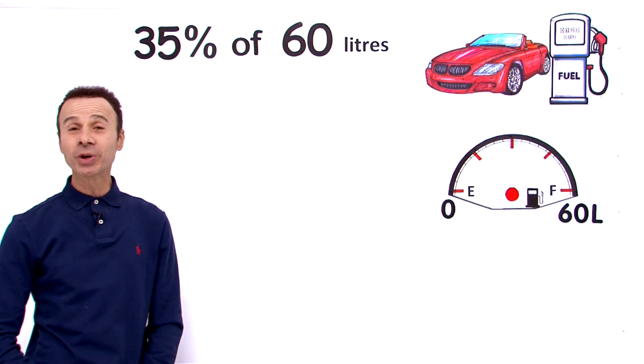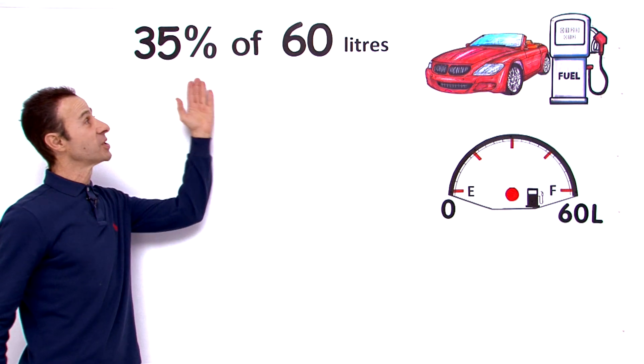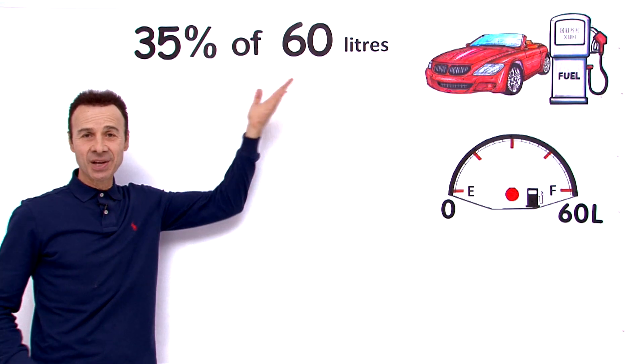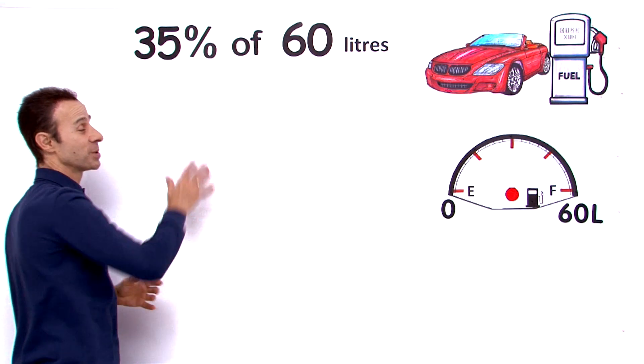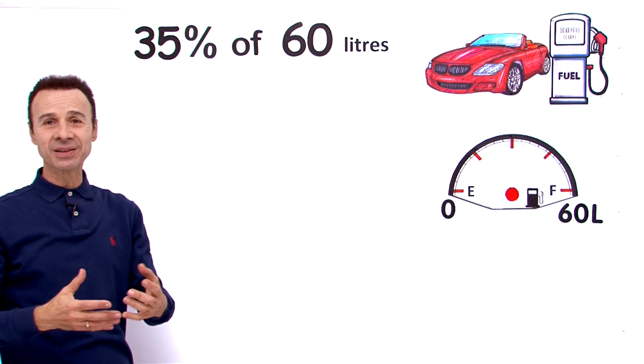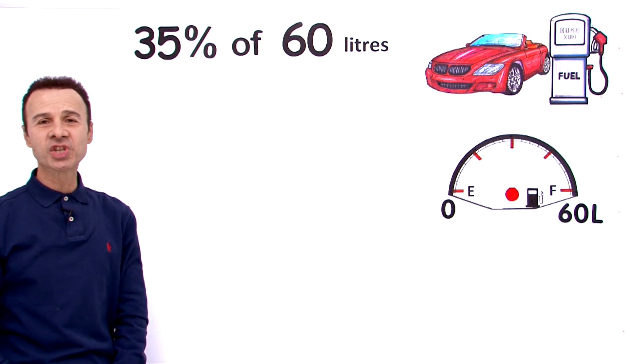Okay, in this video episode we are looking for 35% of 60 litres, so how do we work this out? Well, the first thing we want to do is recognize that 35% is percent per hundred. We want to change that 35% into a fraction.